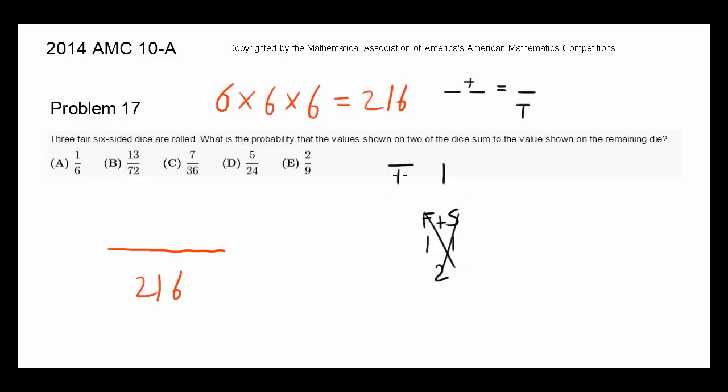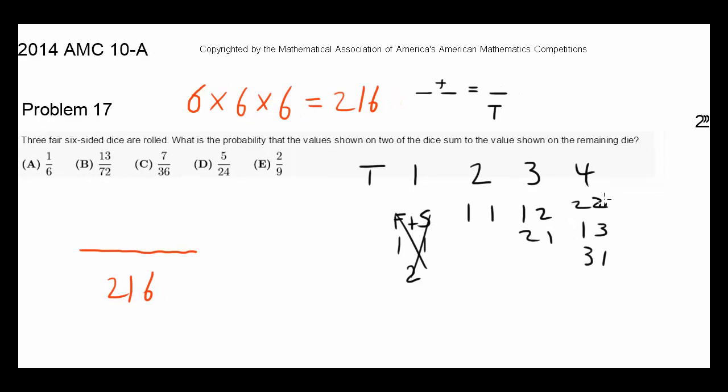How about when the value of the third die is two? Well, we have one and one. When it's three: one and two, two and one. When it's four: two, two; one, three; and three, one. When it's five: